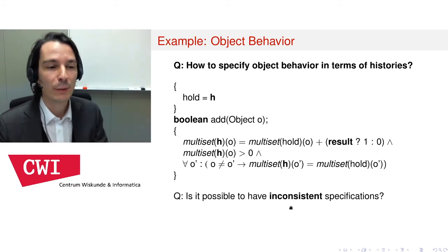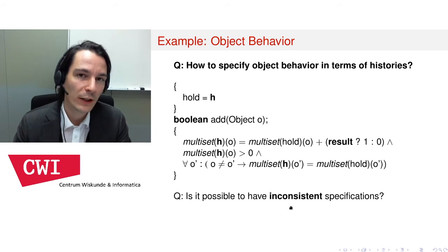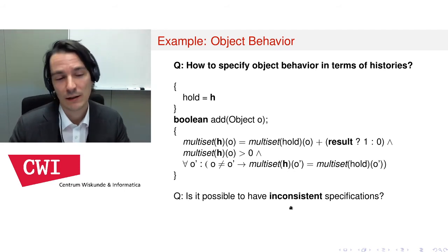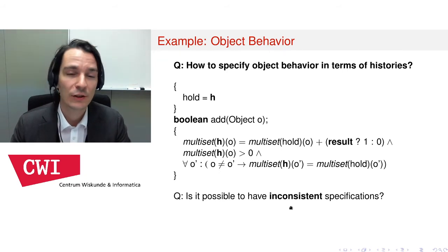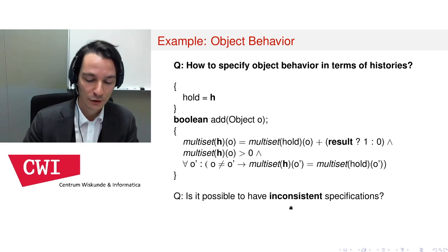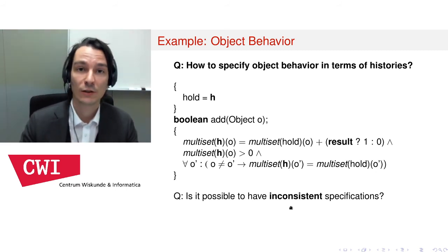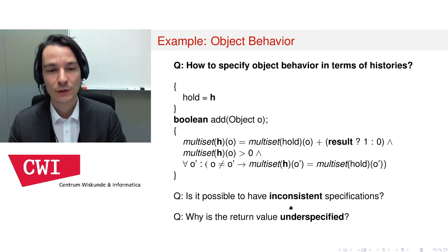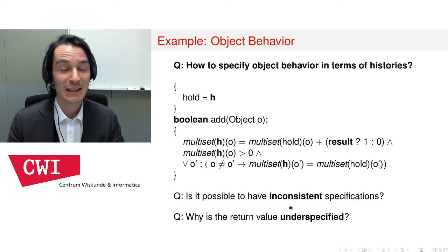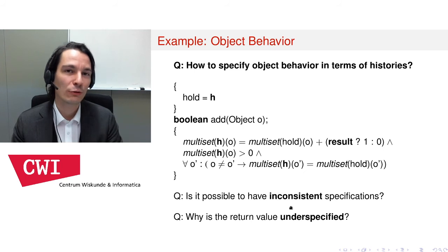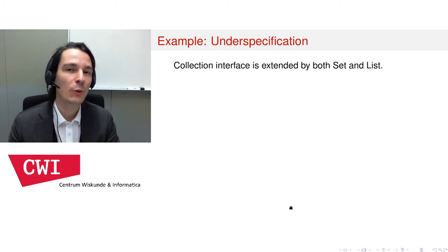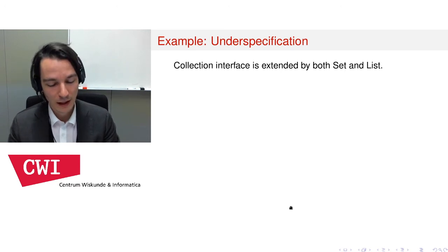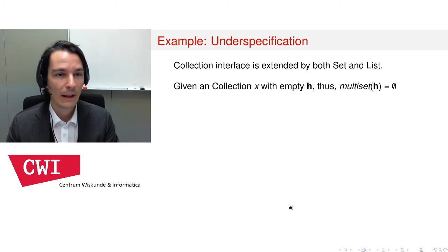You might ask whether it is possible to specify an interface with a specification that is inconsistent — meaning no correct implementation actually satisfies it. Yes, this is possible. In the paper we explain how to show the specification is consistent by witnessing a reference implementation and proving it correct with respect to the specification. You might also notice that the return value of the add method is underspecified in this contract — it is not specified whether the result is true or false. Why is this?